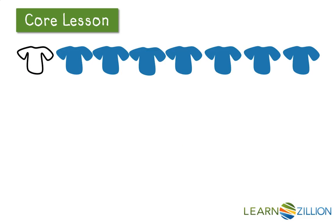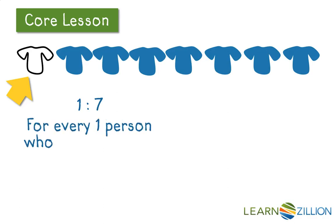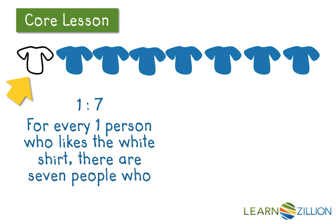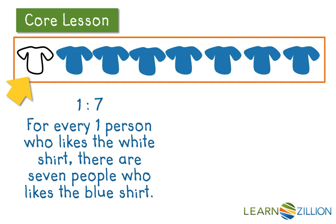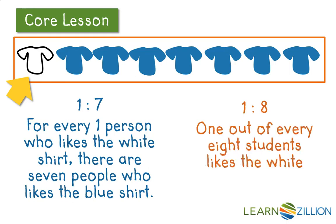Let's see if that holds true when we look at the white shirt ratios. The part-to-part ratio here is one to seven, meaning for every one person who likes the white shirt, there are seven people who like the blue shirt. Order is really important — if we'd switched it up, we would imply that there are seven people who like the white shirt, which is simply not true. The part-to-total ratio is one to eight: one out of every eight students likes the white shirt. Notice again, the language helps us understand what these ratios mean — 'for every there are' for part-to-part and 'out of every' for part-to-total.